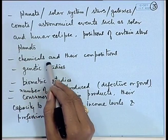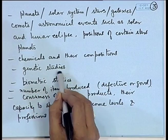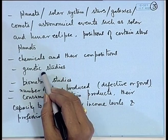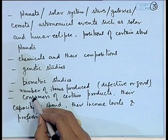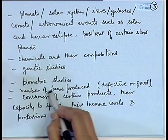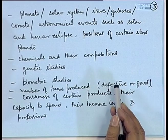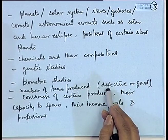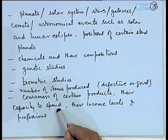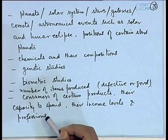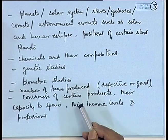Biologists study the genetic makeup of certain human beings and items, and there are biometric studies. In industry, when manufacturing is being done, what is the percentage of defective items produced by a particular manufacturing process? This helps rectify or improve the process to reduce defects. In economics, the consumers of certain products — what is their capacity to spend, what are their income levels and professions — are useful for creating products needed for particular types of consumers.